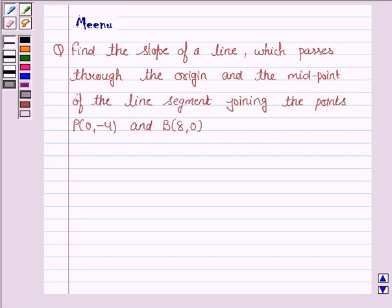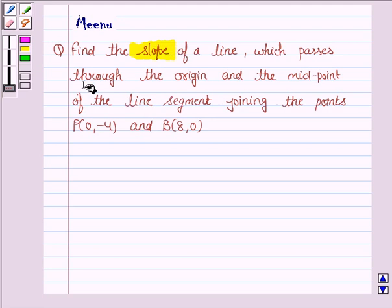Hello and welcome to the session. Let us discuss the following question. Find the slope of a line which passes through the origin and the midpoint of the line segment joining the points P(0, -4) and P(8, 0).